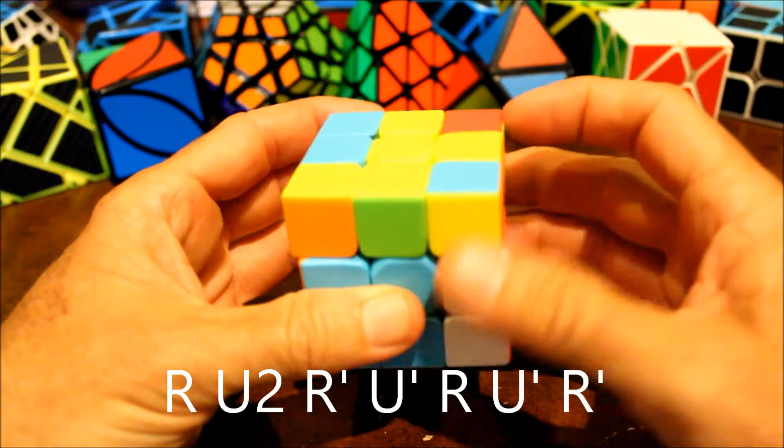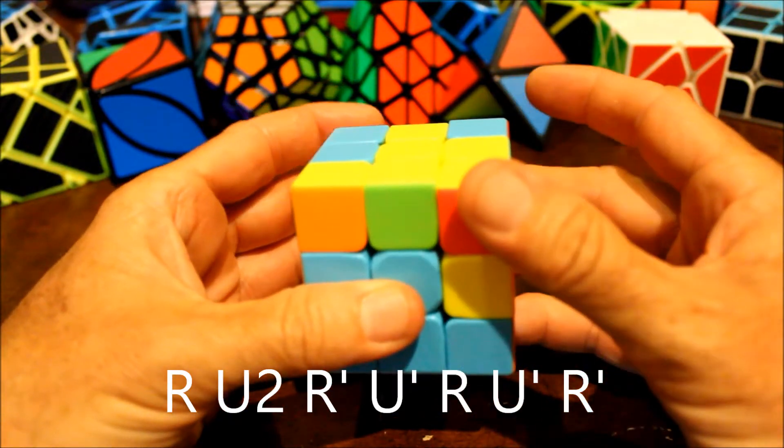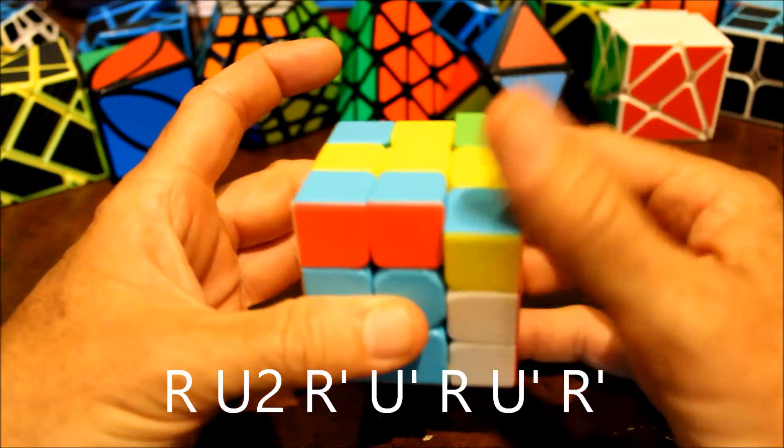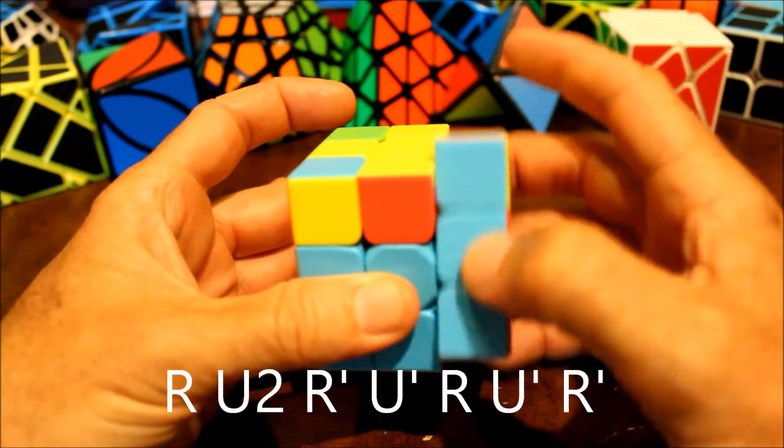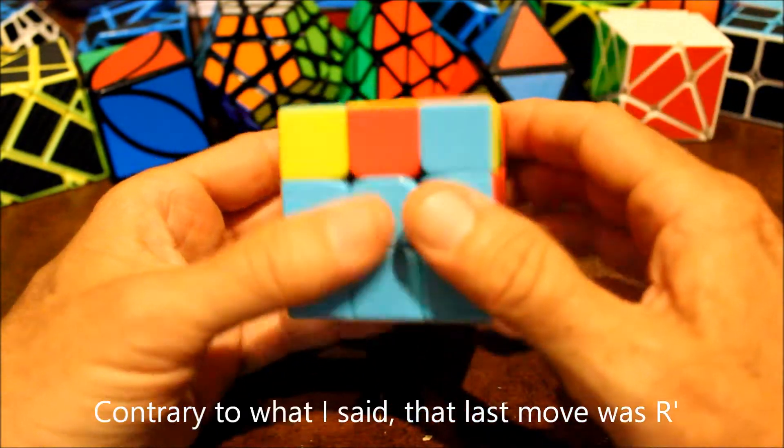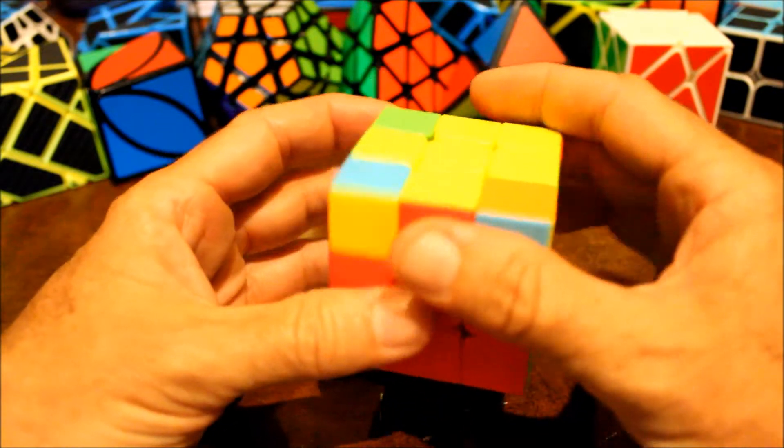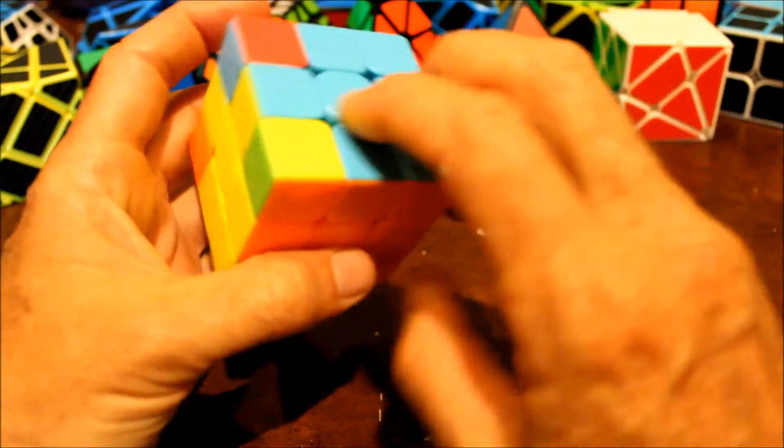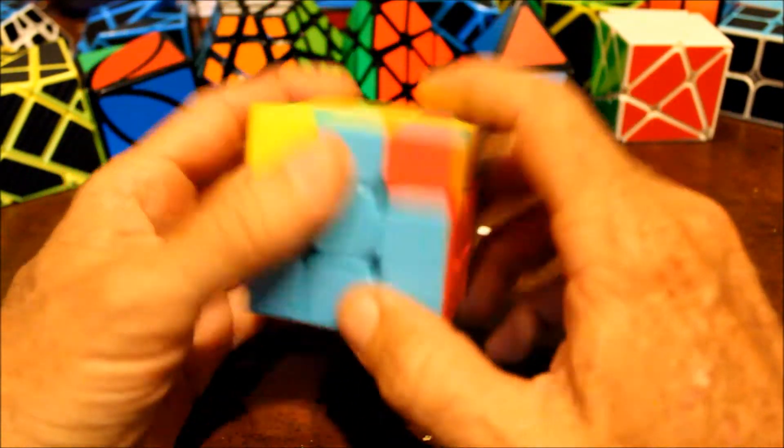Right, up two, right prime, up prime, right, up prime, right. And then fix the positions and you will see that they are all correct.